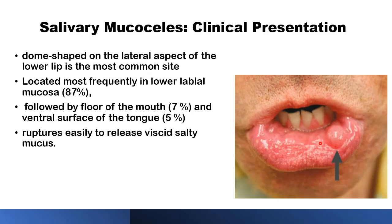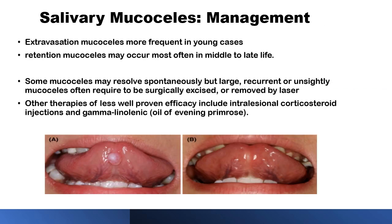They usually affect the inside of the lower lip, particularly the lateral part, which is a common site for lip biting. About 87% of them are located in this area, followed by the floor of the mouth at about 7%, and the ventral surface of the tongue at about 5%. They can rupture easily, releasing a viscid salty mucus — the retained saliva within the cyst. Extravasation mucoceles are more frequent in the young population, whereas retention mucoceles are seen more often in middle to later life.